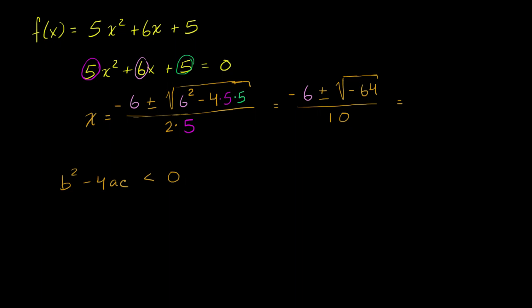So this is going to be equal to negative 6 plus or minus 8i over 10. The square root of negative 64 is 8i, if we extend the principal square root function to complex numbers.